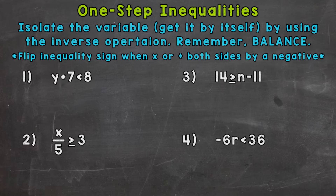One-step inequalities are just like one-step equations. We need to isolate the variable, which means get it by itself, by using the inverse or opposite operation. Keep everything balanced — so whatever you do to one side, you have to do to the other. The difference between inequalities and equations are the number of solutions.